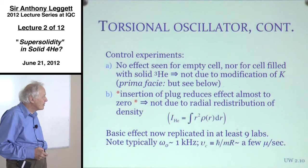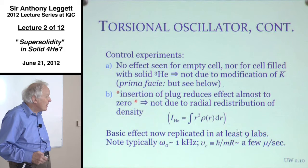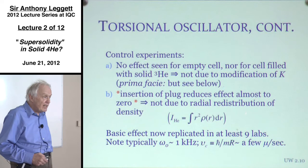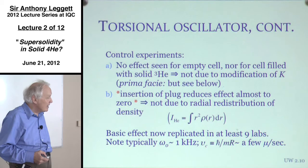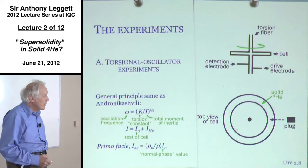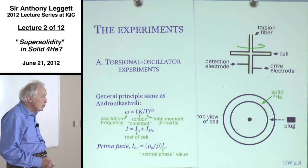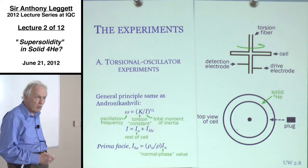A second very crucial observation, which has been repeated by others, is that insertion of a plug in the annular circuit reduces the effect almost to zero. This rules out a second rather obvious conjecture — that there is indeed a change in moment of inertia simply due to redistribution of density. If you put the plug in, any density redistribution should be pretty much unaffected. So it does look as if the effect is essentially dependent on the fact that the ring is connected as a whole — a very crucial point about the entire experimental situation.